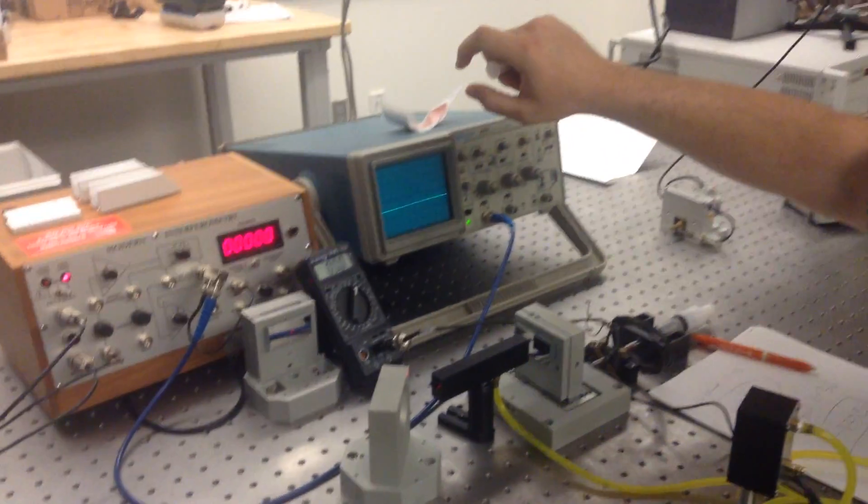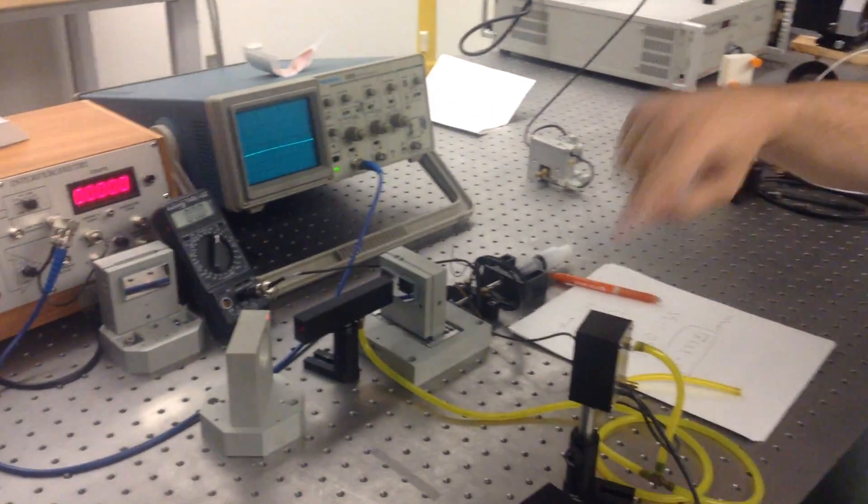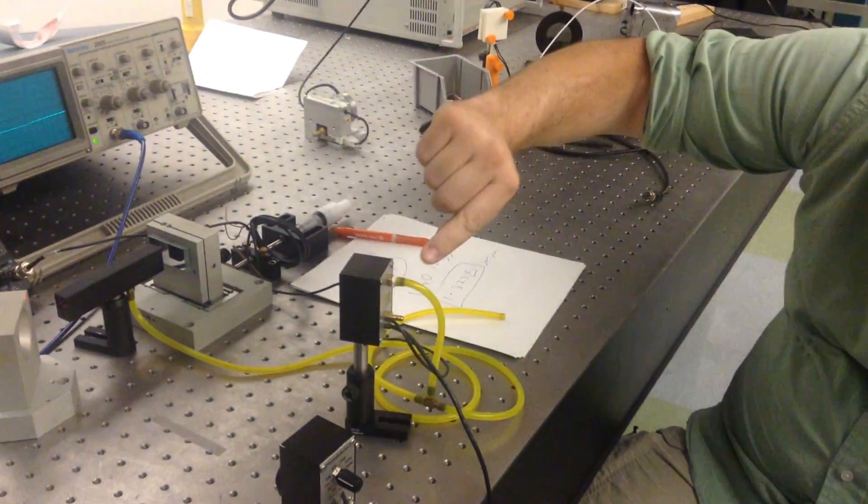We have a voltmeter set to the 200 volt setting DC that's connected to the pressure sensor. And then if we zoom in here, Majeed, you can see that 10 volts corresponds to one atmosphere.